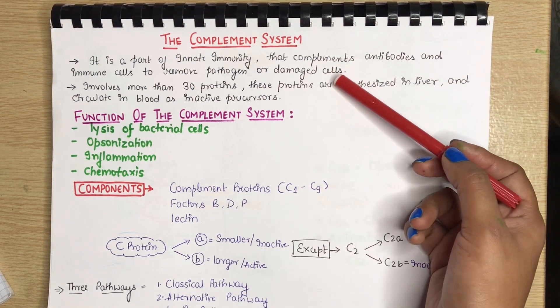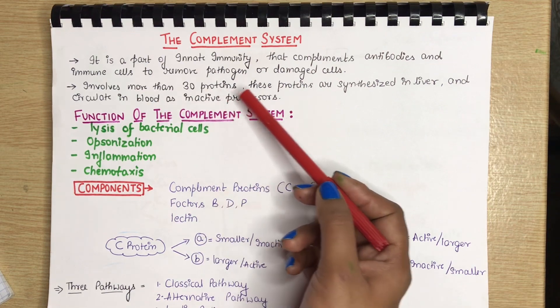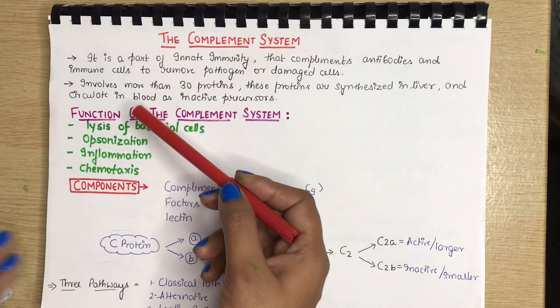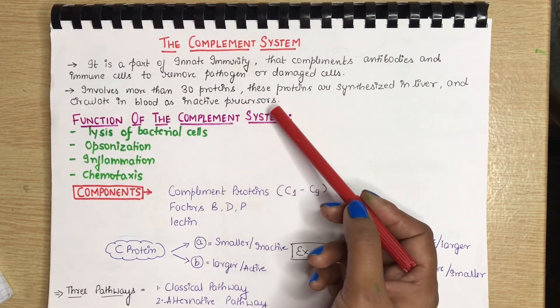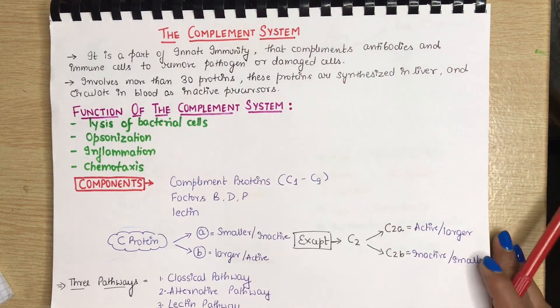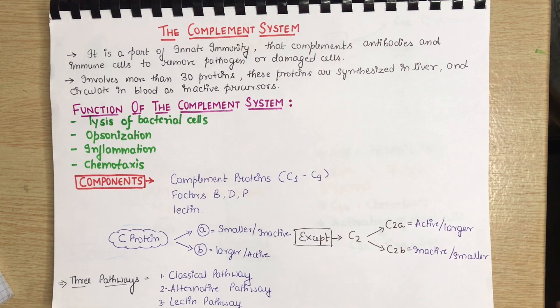In short, it is doing the immune clearance. It involves more than 30 proteins. These proteins are synthesized in liver and circulate in blood as inactive precursors. The functions of the complement protein are lysis of bacterial cell, opsonization, inflammation and chemotaxis.